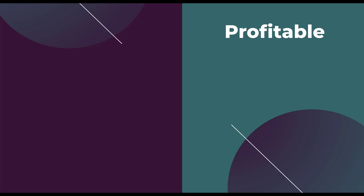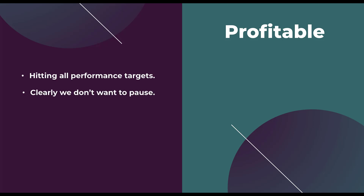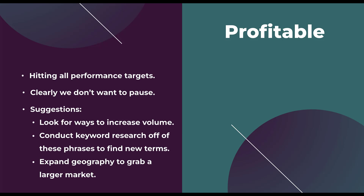Obviously the first one, being profitable, is pretty easy. We're already hitting all the performance targets that we have, so we clearly don't want to pause this. The only real suggestions here are to look for ways to increase the volume — can we get more volume out of this individual keyword? Can we conduct additional keyword research and find new phrases based on this original keyword that can help extend our account and potentially also be profitable? Or does it make sense to expand our geography or reach into a different market? Profitable keywords are not the main focus of this video, but it is a category of keyword performance you could have in your account.